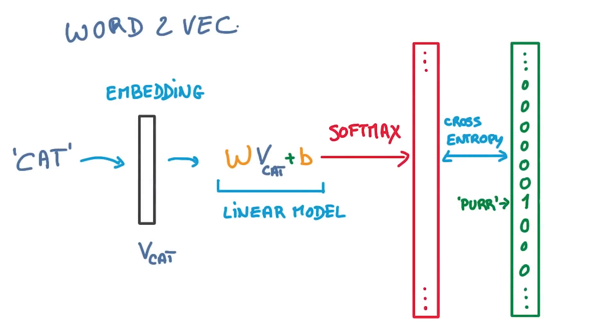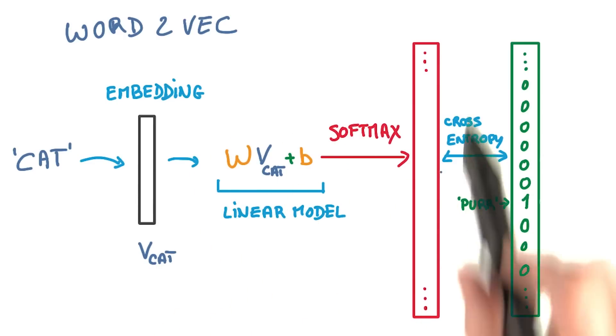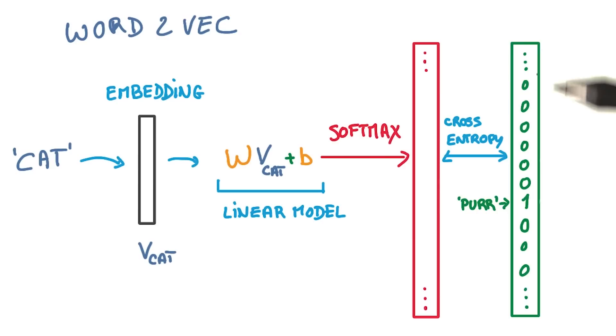Second, we have the issue of trying to predict words, and there are lots of them. So in Word2Vec, we have this setup. We have a word that we're going to embed into a small vector, and feed that into a simple linear model with weights and biases, and that outputs a softmax probability. This is then compared to the target, which is another word in the context of the input word.